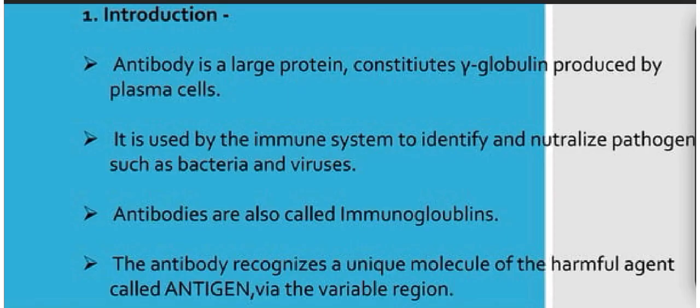At first, we will see what is antibody. Antibody is a large protein constituting of gamma globulin produced by plasma cells. It is used by the immune system to identify and neutralize pathogens such as bacteria and viruses.